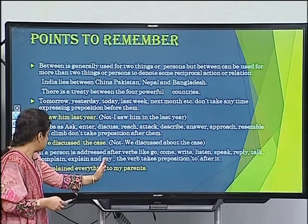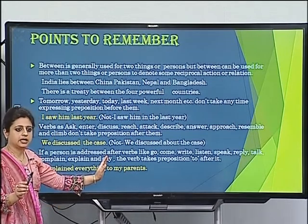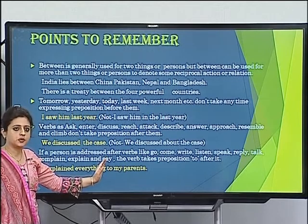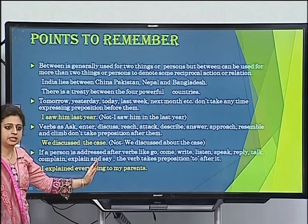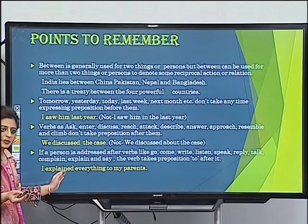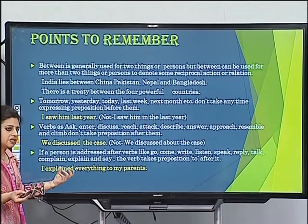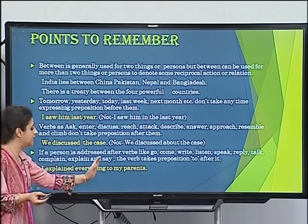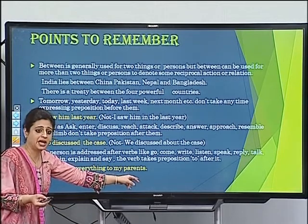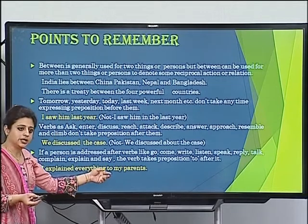In case the sentence had been 'I explained everything,' — subject 'I,' verb 'explained,' complement 'everything' — no preposition was needed. But as soon as 'my parents' was added to the sentence, 'to' became necessary to establish a connection between the verb and its object.